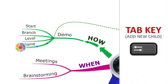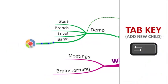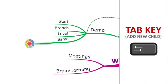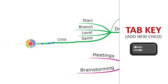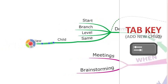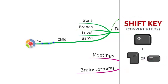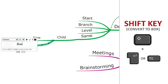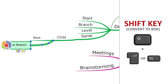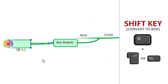Use the Tab key to add a new branch to the end of your selected branch. If you hold the Shift key when using the Tab or Enter key, the new branches added will be box branches.